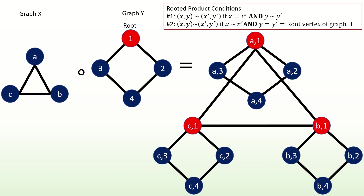This demonstrates an interesting difference between Cartesian products and rooted products. Unlike the Cartesian product, the rooted product of two Hamiltonian graphs is not necessarily Hamiltonian. In fact, it will never be. The intuition is that we would get stuck if we tried to visit all the vertices in the graph, as we would be forced to visit some vertices more than once.